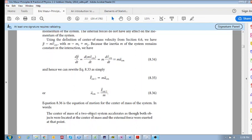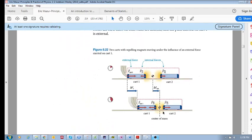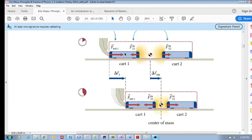So the center of mass of a two-object system accelerates as though both objects were located at the center of mass and the external force were exerted at that point. So we've got these two objects. They're doing all kinds of things inside the system. But the center of mass accelerates as though all this mass, all the inertia will be concentrated at that point and this external force is being applied at that point.